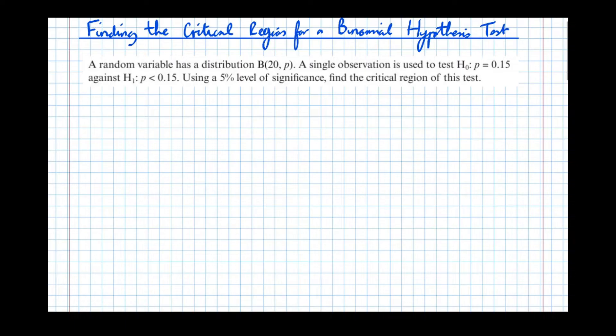So I'm going to look at the question here. It says a random variable has a distribution binomial 20p. A single observation is used to test the null hypothesis that p is 0.15, and the alternate hypothesis is p is less than 0.15. Using a 5% level of significance, find the critical region for this test.